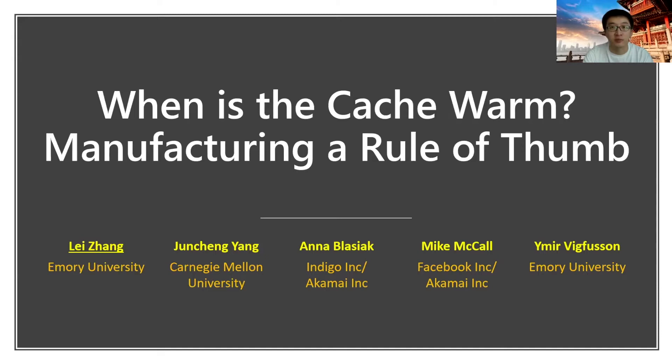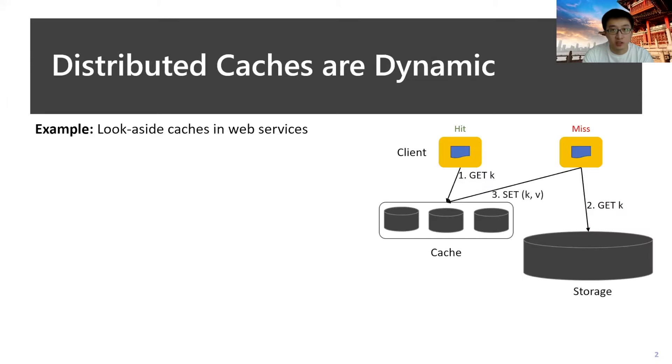We use a lot of distributed caches today. A typical architecture would be the look-aside cache where you have a bunch of in-memory cache servers sitting beside the client and storage. Every time the client has a request, it will first check if it can be served from the cache service.